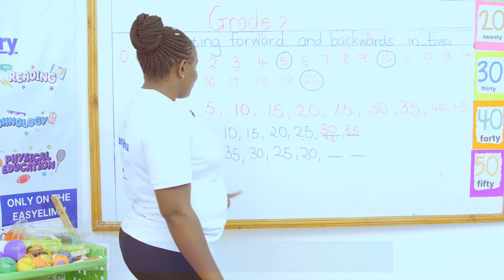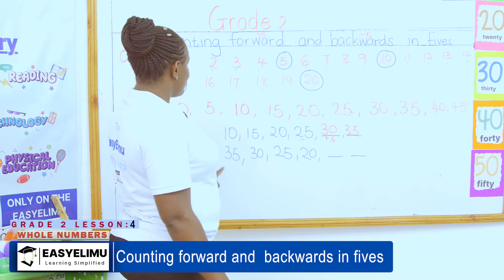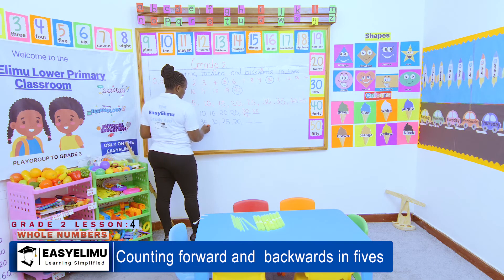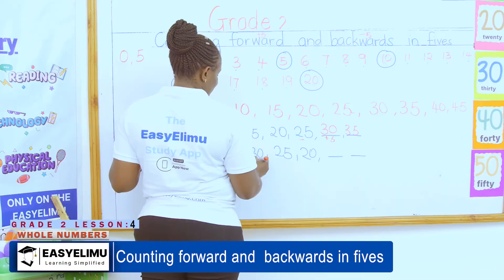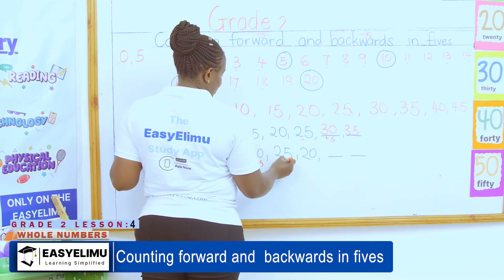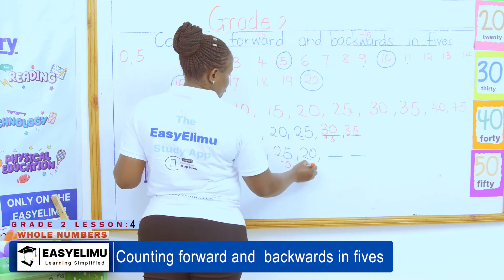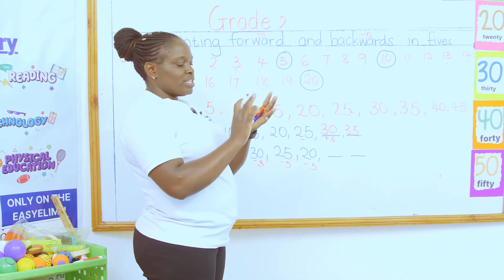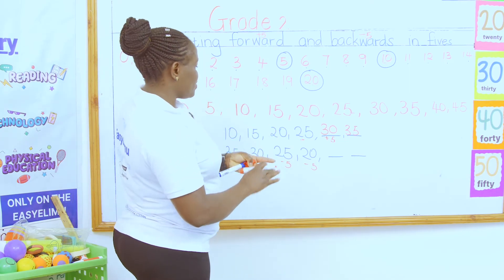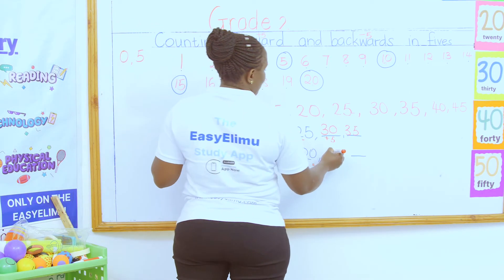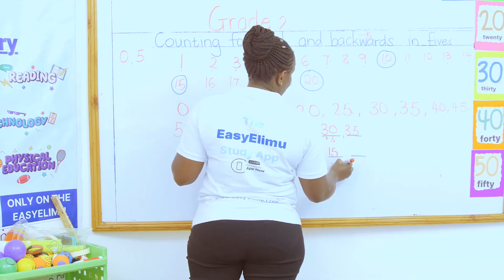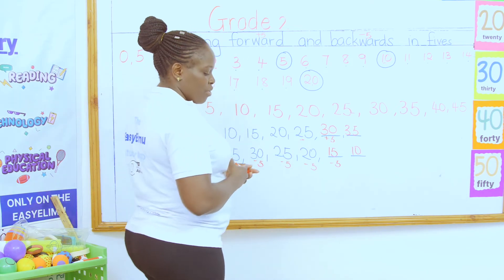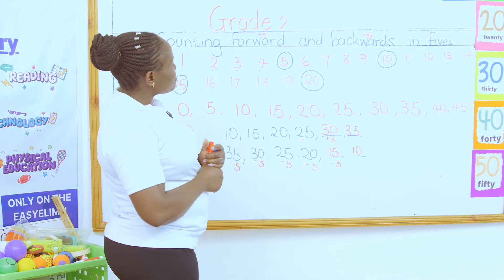Now I've been given 35 and I'm told to reduce these numbers by five. Take away 5, I get 30. Take away 5, I get 25. Take away 5, I get 20. Take away 5 — 15. Take away 5 — it will be 10. That is how you count numbers in fives, forward and backwards.